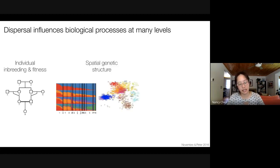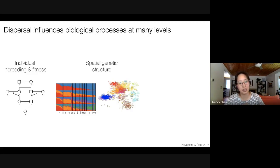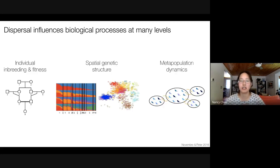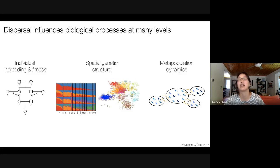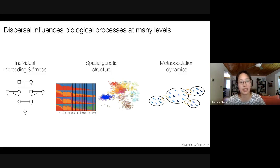On a slightly larger spatial scale, dispersal will largely control patterns of spatial genetic structure that we can observe over a landscape. And over longer time scales and larger spatial scales, dispersal behaviors play a large role in governing metapopulation dynamics, and over longer evolutionary time also governs the process of speciation.